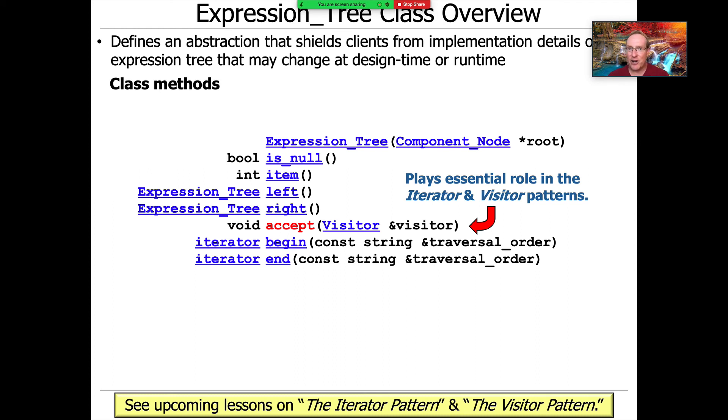We have a method called accept, which plays a very essential role in the upcoming visitor pattern, and it's also used in conjunction with an iterator. We're going to be able to iterate through every element in our expression tree, which corresponds to the component node it encapsulates, and visit it. The visit operation will allow us to extensively add new computations on our expression tree without actually exposing the details of how that works, by very carefully decoupling the structure of the expression tree from the operations we're passing to it through our visitors.